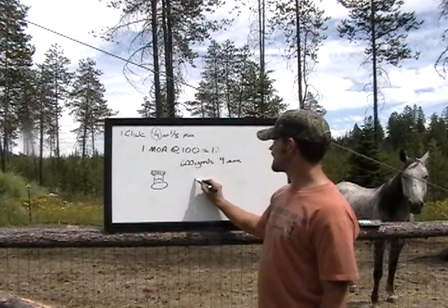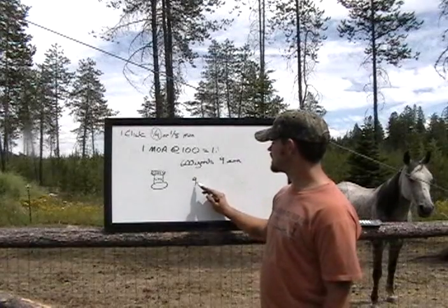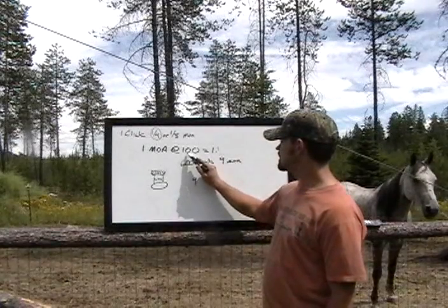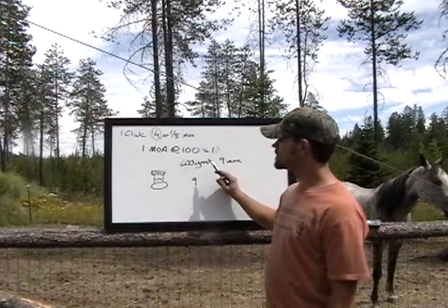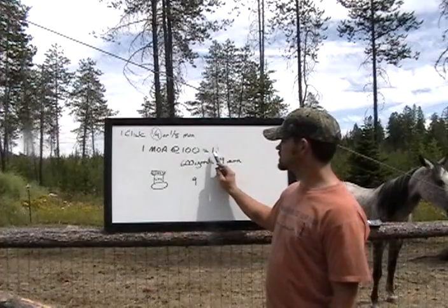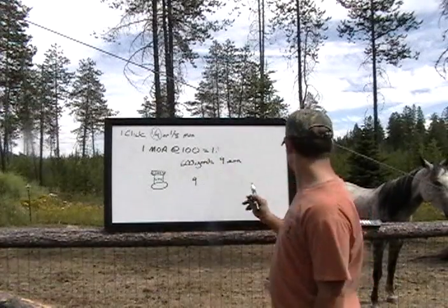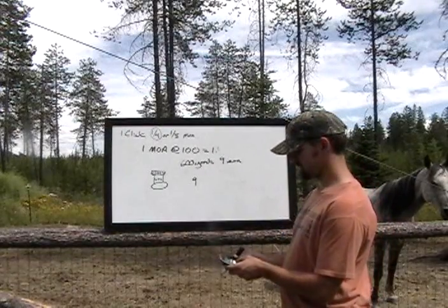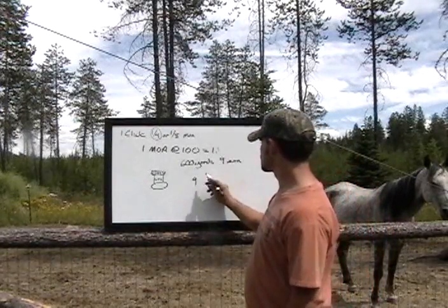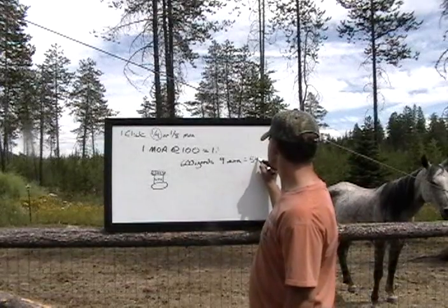So, when I take 9 minutes, I'm not going to say, well, 9 minutes equals 1 inch because we're not at 100 yards, we're at 600 yards. Well, it doesn't equal an inch anymore. It equals 6 inches at 600 yards. That equals 54 inches of drop.